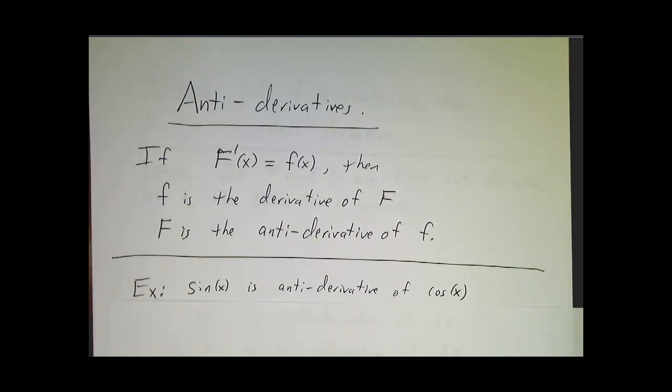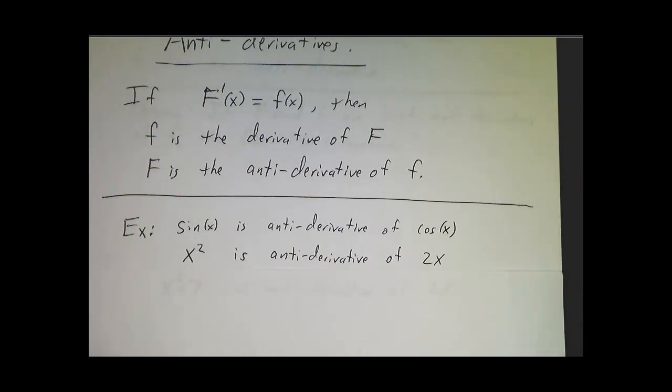For example, cos is the derivative of sin, so sin is the antiderivative of cos. 2x is the derivative of x squared, so x squared is the antiderivative of 2x.